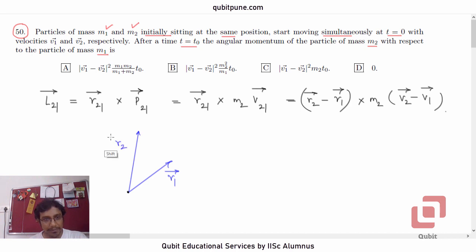Now we want body 2's position relative to body 1. So we basically want this vector. And if I apply the triangle law of vector addition, this vector will turn out to be r2 bar minus r1 bar. That's what I have written here.